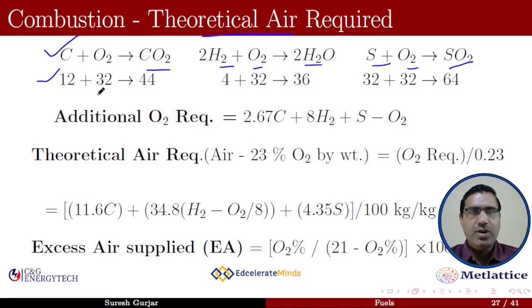For C percentage of carbon, the oxygen required is 32 divided by 12 multiplied by C percent, which equals 2.67C percent. Similarly, the oxygen required for reaction with hydrogen is 32 divided by 4 times the H2 percentage, that is 8H2 percent.